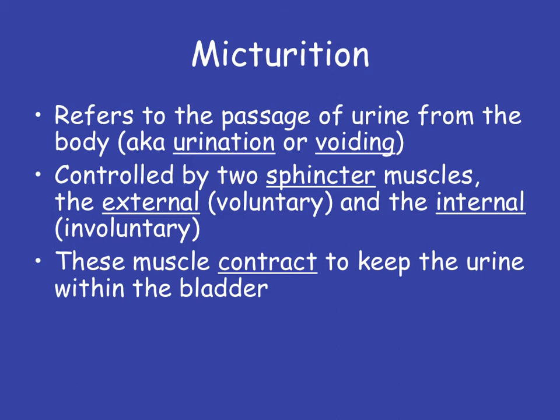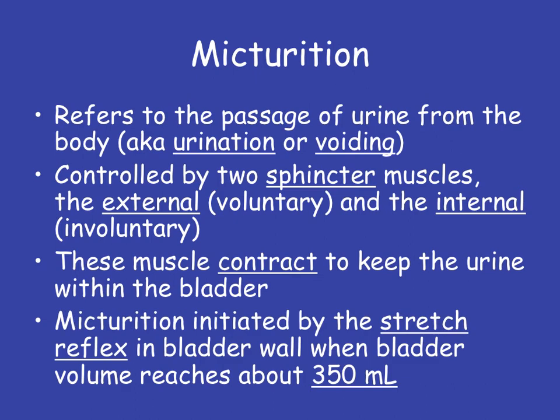The process of micturition is initiated by a stretch reflex. As the bladder fills, it stretches. When it gets to a certain stretch point — when the bladder volume reaches about 350 milliliters — we start to get that signal to our brain that we need to go to the bathroom. This is a reflex that happens automatically every time. Since we control that external sphincter muscle, that doesn't mean that when we get that stretch reflex, we automatically go to the bathroom. But that's when our brain starts receiving that signal.